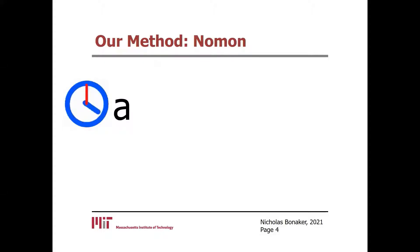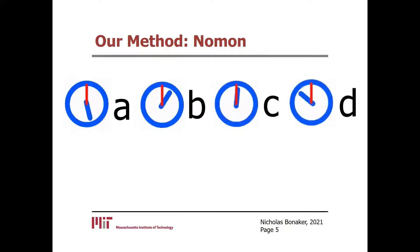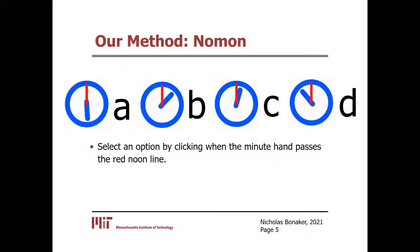Our selection method, NOMON, is designed to facilitate fast and flexible selection with a single switch, and it directly addresses these limitations through its Bayesian-based selection scheme. NOMON works a bit differently than row-column scanning — it uses clocks to indicate selection options. I find the option I want to select and look at the clock to its left. Here, I want to select the letter B, so I'm looking at the clock to its left. I select this clock by activating my switch, or clicking, when the minute hand passes a red noon line. Notice how the adjacent clocks turn black. NOMON highlights its best guesses for the clocks you're going for in blue, and clocks are narrowed down over multiple switch presses as more clocks turn black.